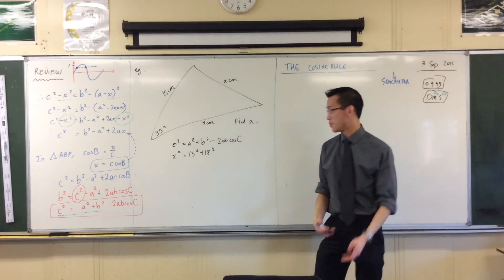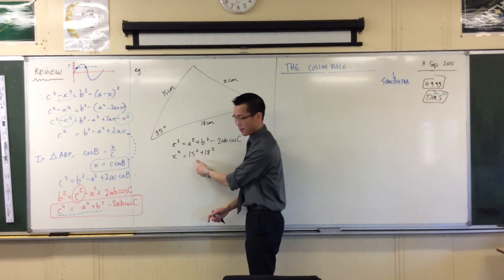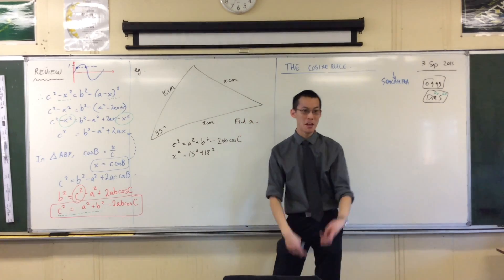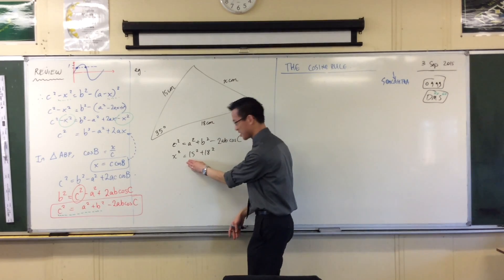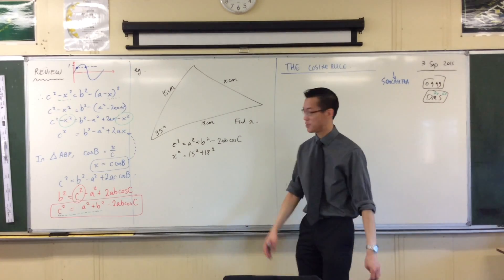It doesn't matter which one's A and which one's B because if I switch them around, 15 squared plus 18 squared is the same as 18 squared plus 15 squared. So you can do them any which way you like, which is great.